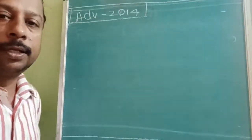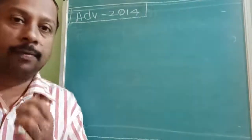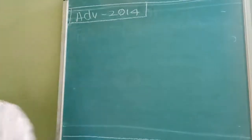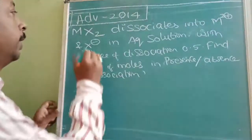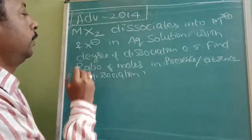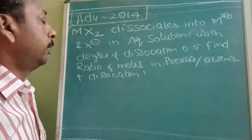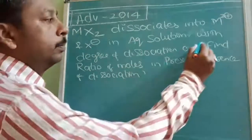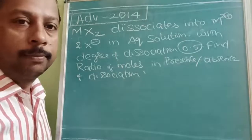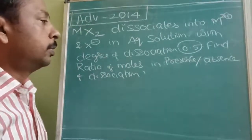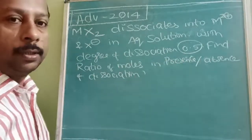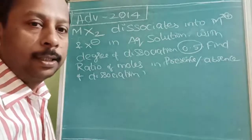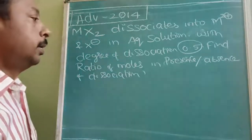So what was the question? What you have to solve? Is your preparation level up to the mark or not — let us see. This was the question: MX2 dissociates into M²⁺ and X⁻ in aqueous solution. The degree of dissociation is 0.5. It was an integer type question. Find the ratio of moles of particles in presence versus absence of dissociation.